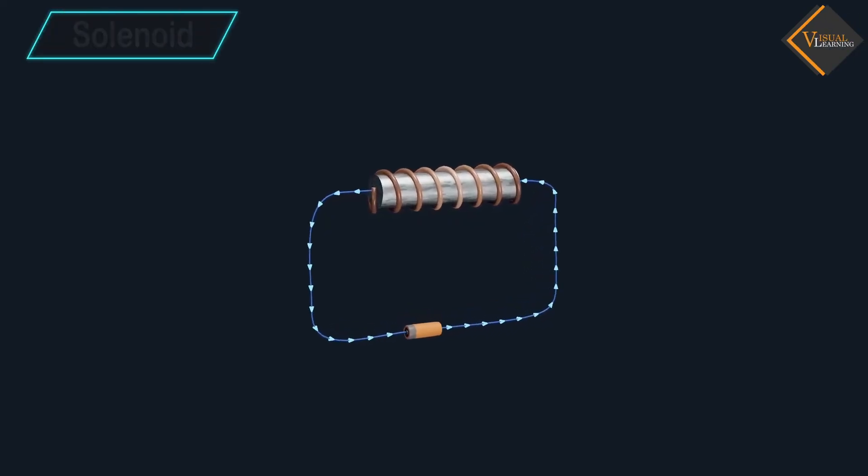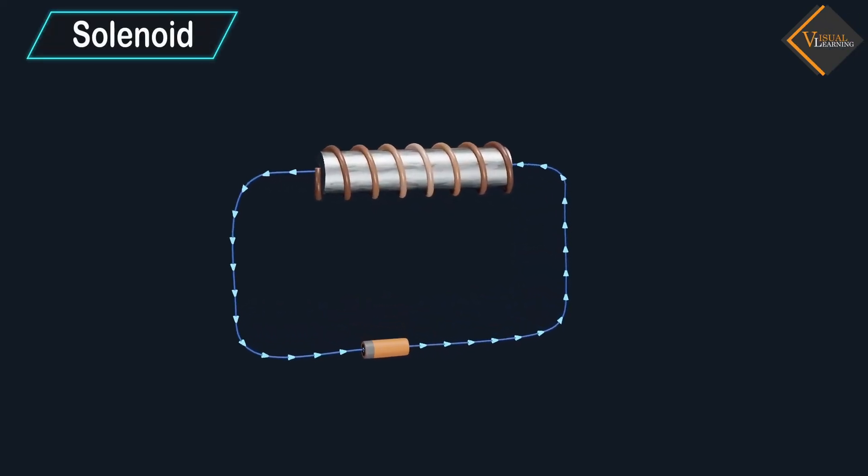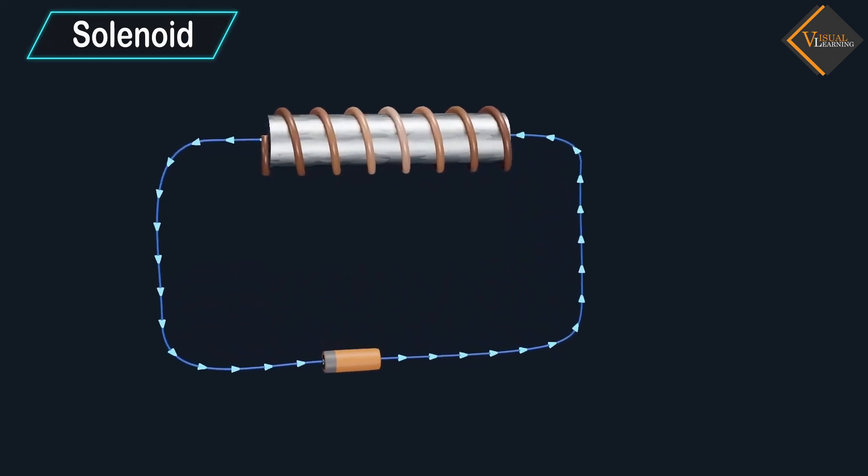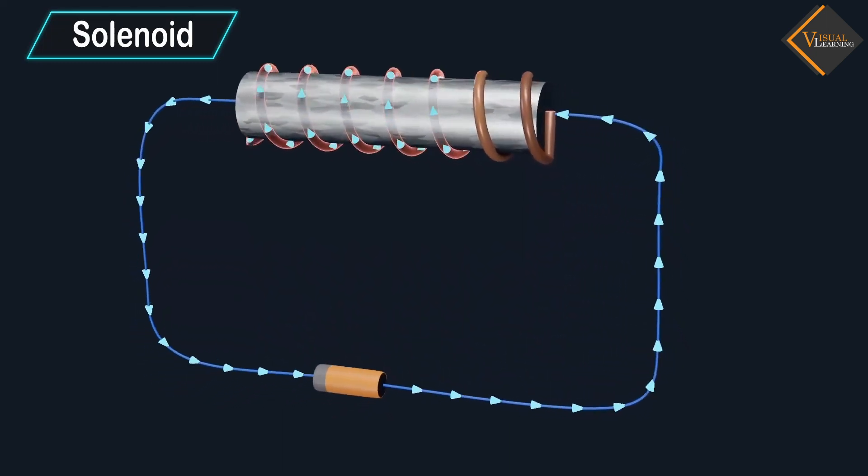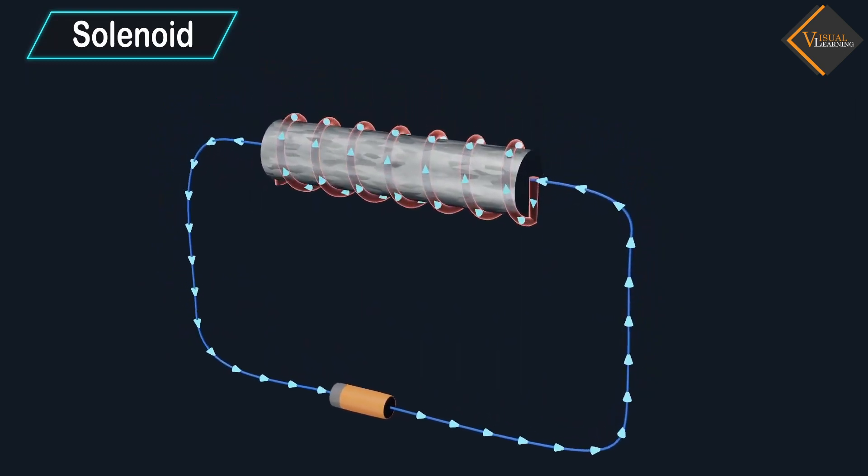In this video, we will understand solenoid. A solenoid is a type of electromagnet formed by a helical coil of wire whose length is substantially greater than its diameter.